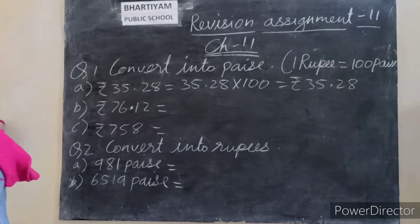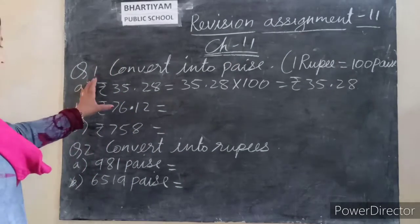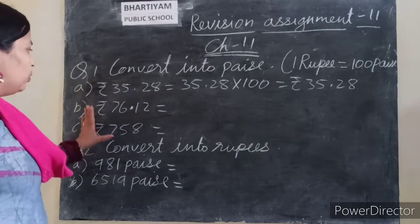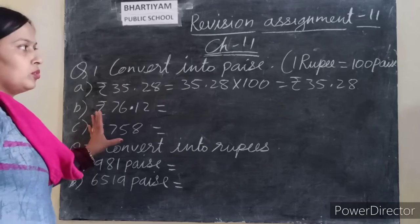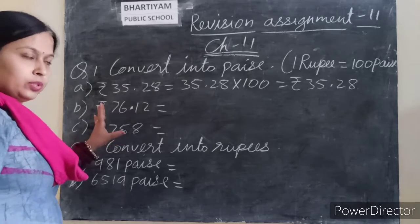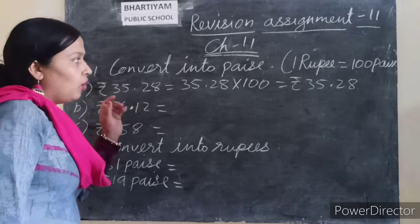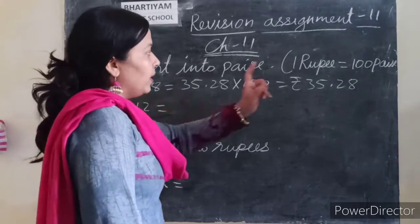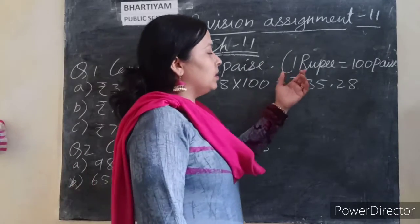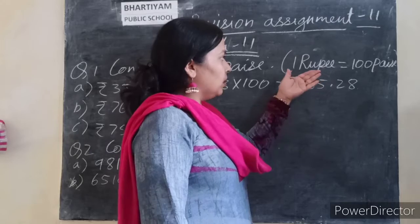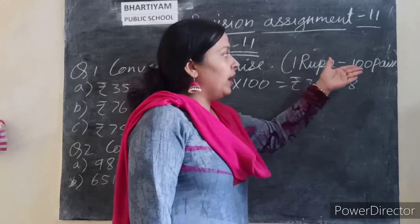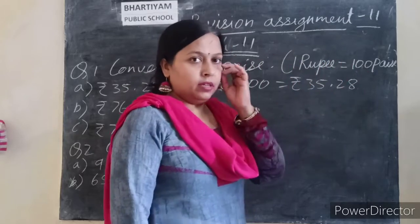Convert the given rupees amount into paise. We know that 1 rupee is equal to 100 paise.